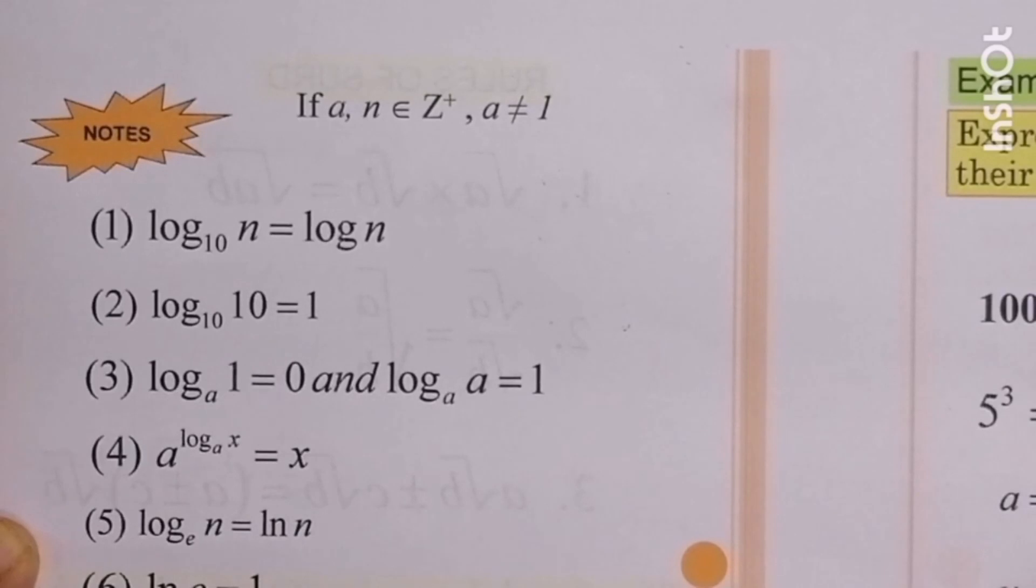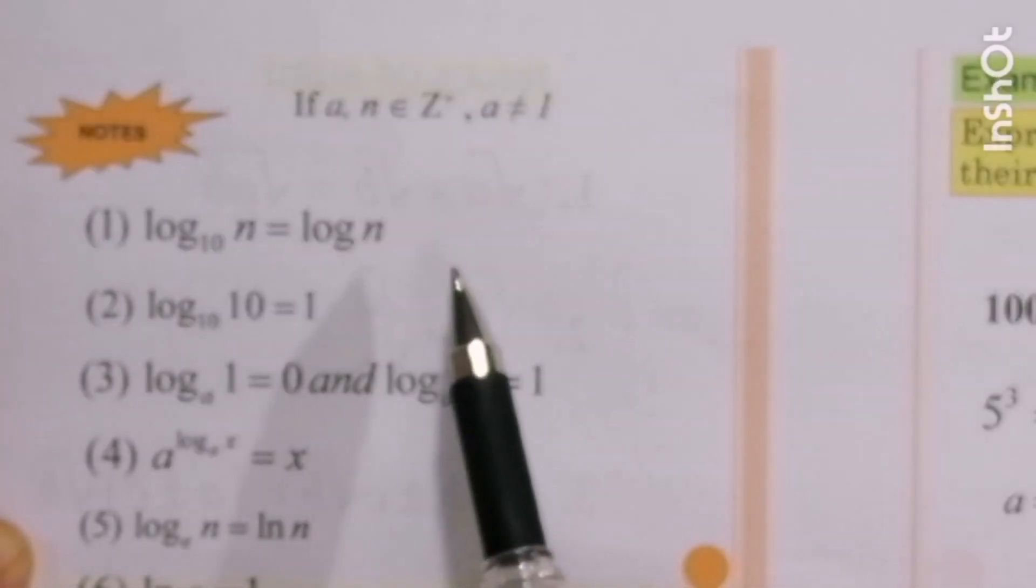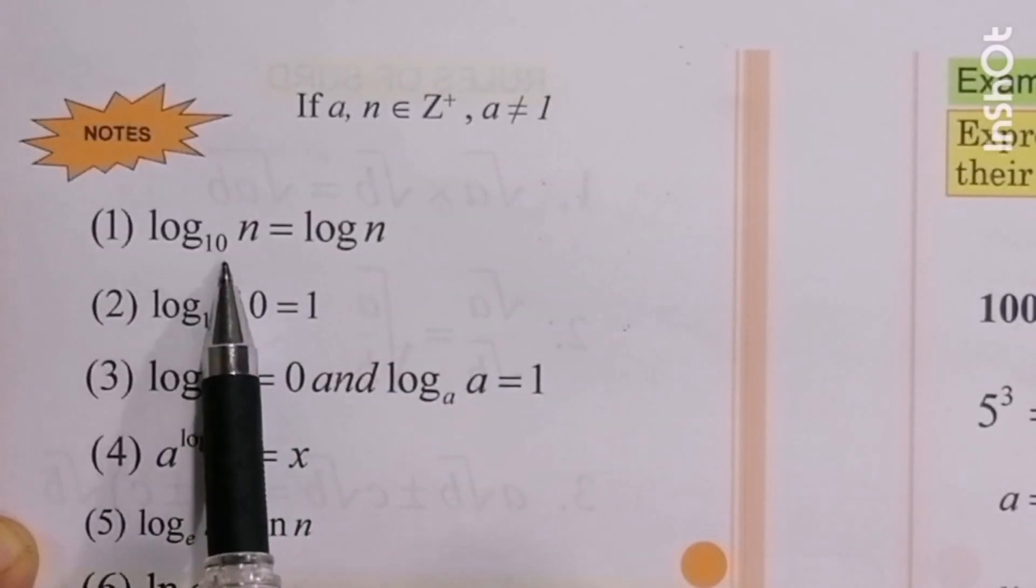Property number 1: log n base 10 equal to log n.